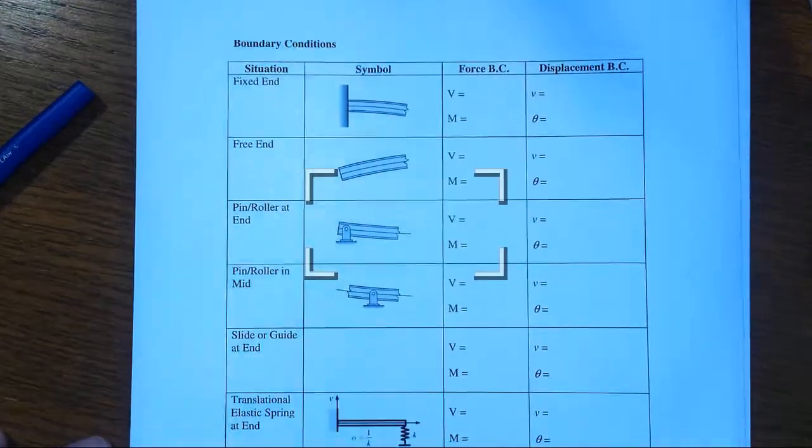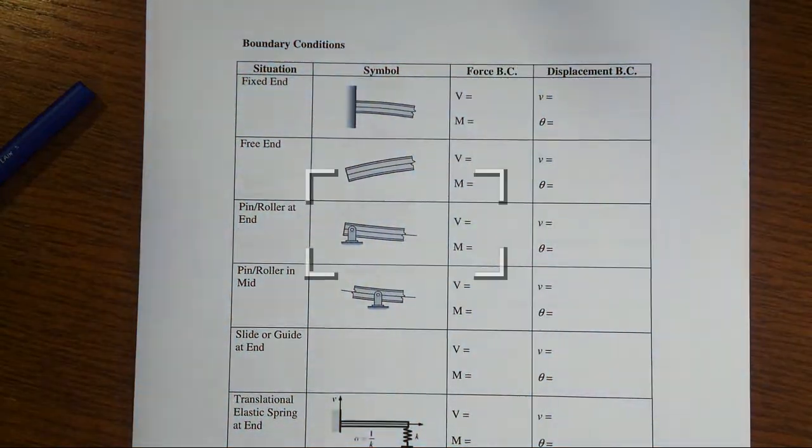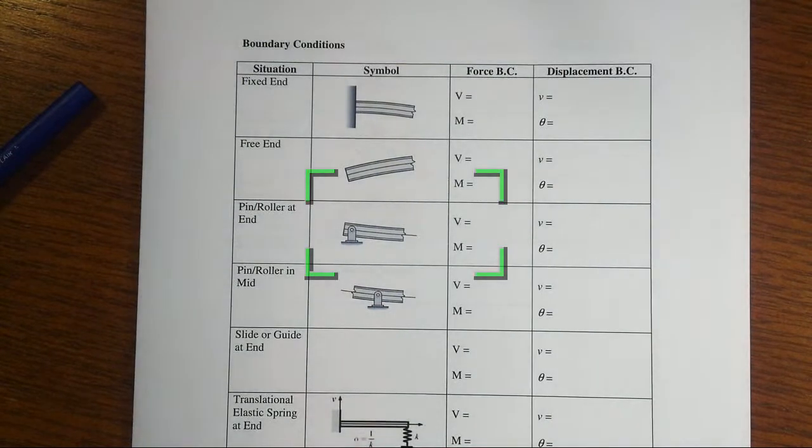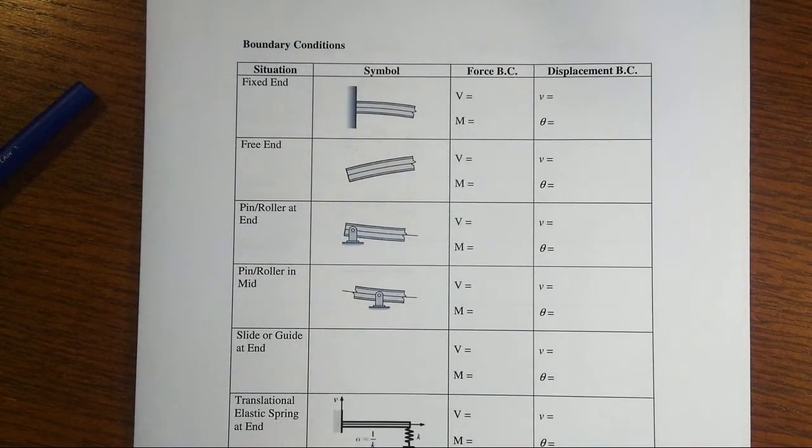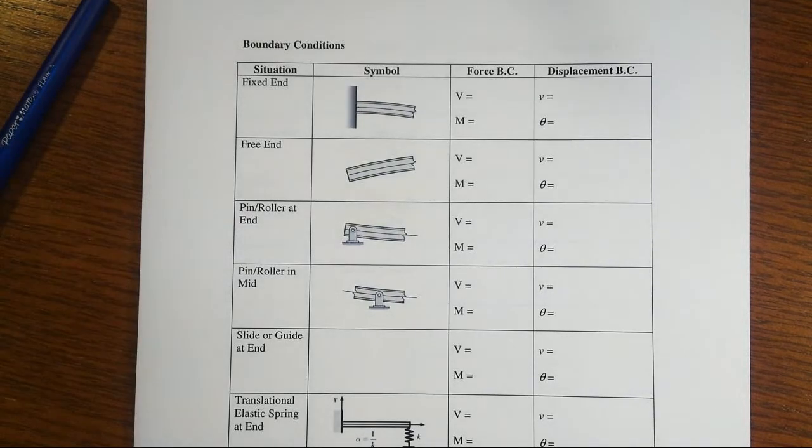Alright, one of the challenges it seems like folks face when they are trying to learn how to develop the models for beam deflections is how to interpret what the boundary conditions ought to be that go along with a particular situation. So we're going to go through a whole variety of these different situations and talk about how you figure out what's going on.